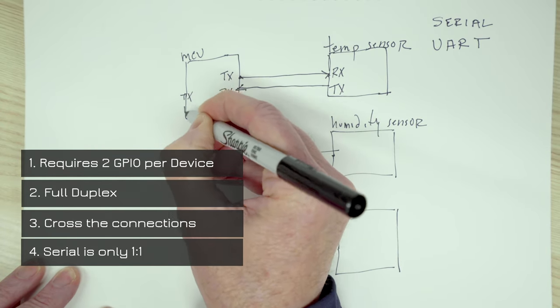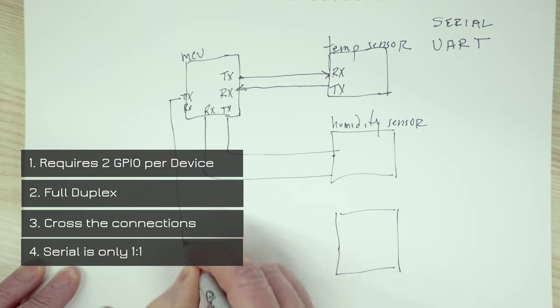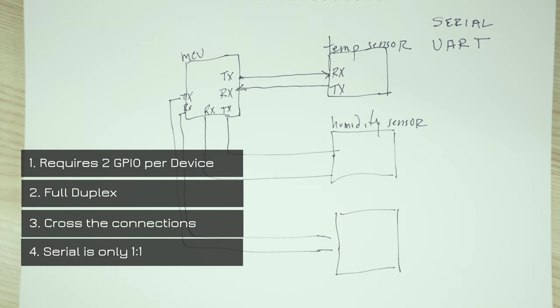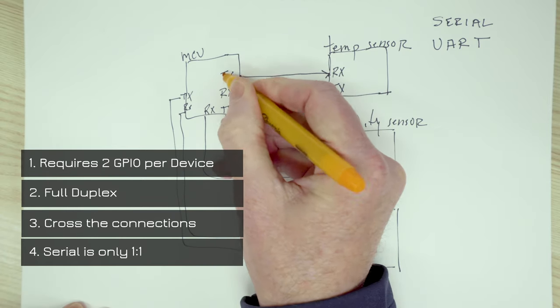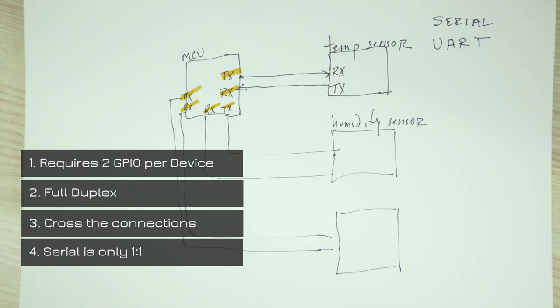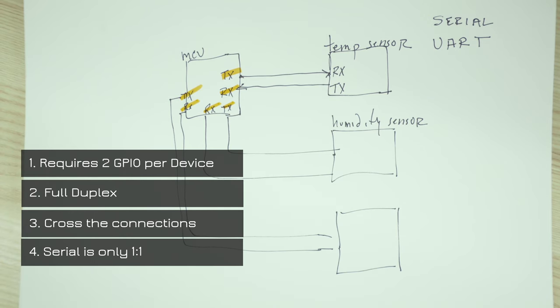we end up having to use two more lines each time to the new device. That means that these lines grow linearly with the number of serial sensors that you're communicating with, which is very expensive. It's also the case that it is not possible typically to have that many serial ports managed in hardware by the microcontroller.